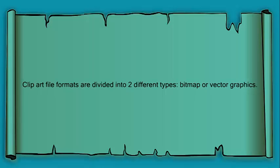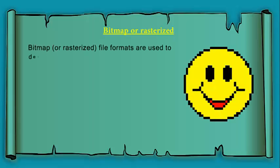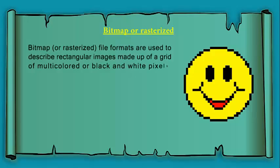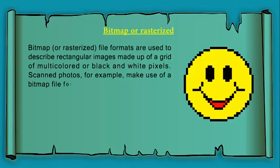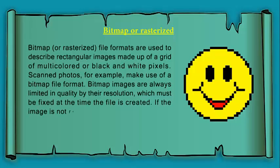Bitmap or Raster Graphics. Bitmap or rasterized file formats are used to describe rectangular images made up of a grid of multicolored or black and white pixels. Scanned photos, for example, make use of a bitmap file format. Bitmap images are always limited in quality by their resolution, which must be fixed at the time the file is created.